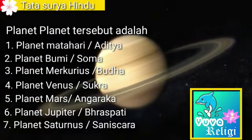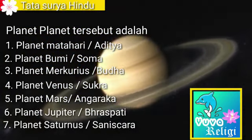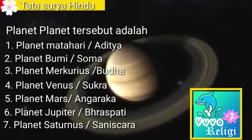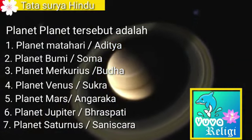Berikut adalah planet-planet tersebut: Aditya, Soma, Buddha, Sukra, Anggaraka, Braspati, dan Sanisca.